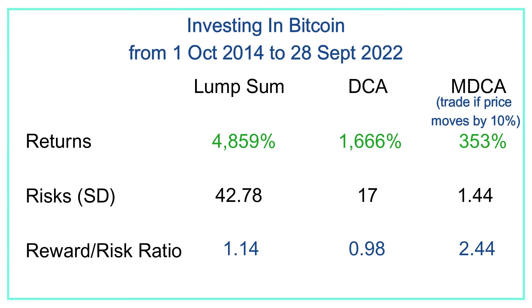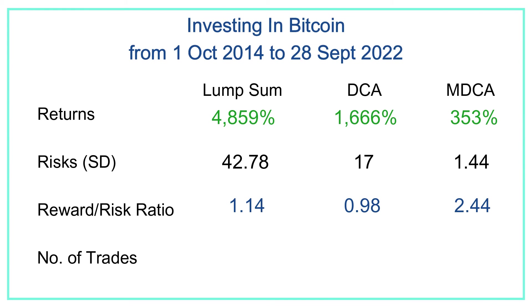Now if we take a look at the reward-risk ratio — which equals the eight-year return divided by the standard deviation — the comparison is even clearer. Movement-Based DCA has the highest reward-risk ratio, which is the best. It's actually more than double the other two strategies, which means for the same amount of risk you take, Movement-Based DCA would more than double the return of the other two strategies.